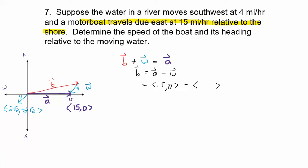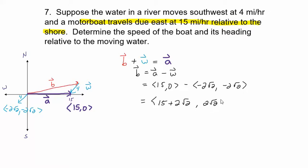Going back to our picture, we now have the components of w: (−2√2, −2√2). We can use those to find vector b. The x-component of b is 15 minus (−2√2), which is 15 + 2√2. The y-component is 0 minus (−2√2), which is 2√2. So the components of b are (15 + 2√2, 2√2). But that's not what the problem is asking for — we need the speed of the boat.